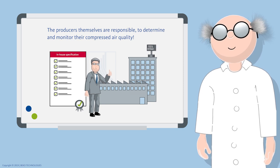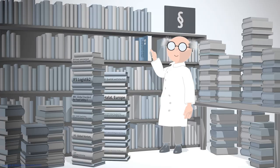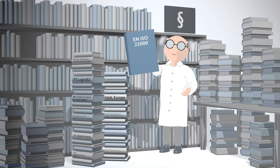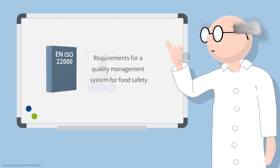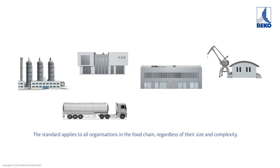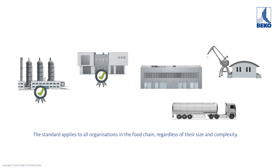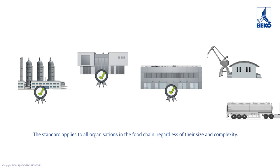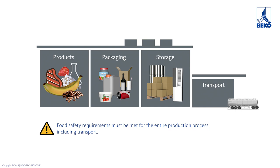Manufacturers are obliged to produce a safe product. The producers themselves are responsible for determining and monitoring their compressed air quality. This is expressly stated in the standard EN ISO 22000, where the requirements for a management system for food safety are defined. The standard applies to all organizations in the food chain, regardless of their size and complexity.